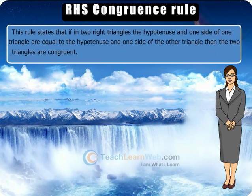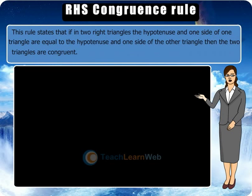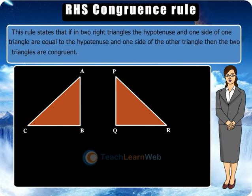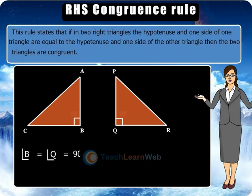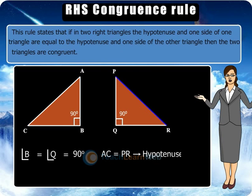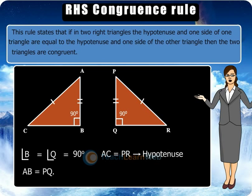Children, observe the two triangles given. We find that angle B is equal to angle Q is equal to 90 degrees. AC is equal to PR (hypotenuse), and AB is equal to PQ. Hence, by RHS congruence rule, triangle ABC is congruent to triangle PQR.